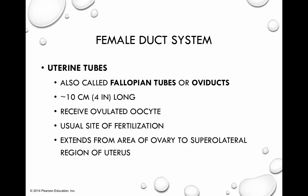From here, we're going to start talking through the female duct system. The ovary produces the gamete, and then that egg has to make its way to the oviduct — also known as the uterine tube or the fallopian tube — where fertilization can take place. The uterine tubes are about 10 centimeters, or 4 inches, in length, and their job is to receive the oocyte once it's been ovulated. There are no direct attachments from the ovary to the uterine tube, so we'll discuss how the oocyte makes its way from the ovary into the tube.